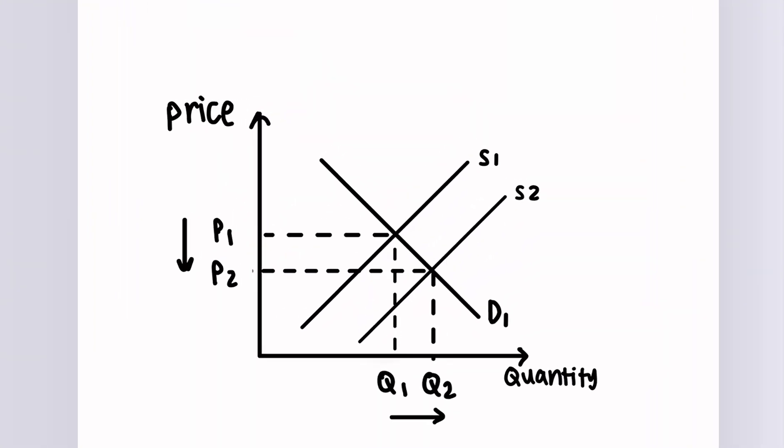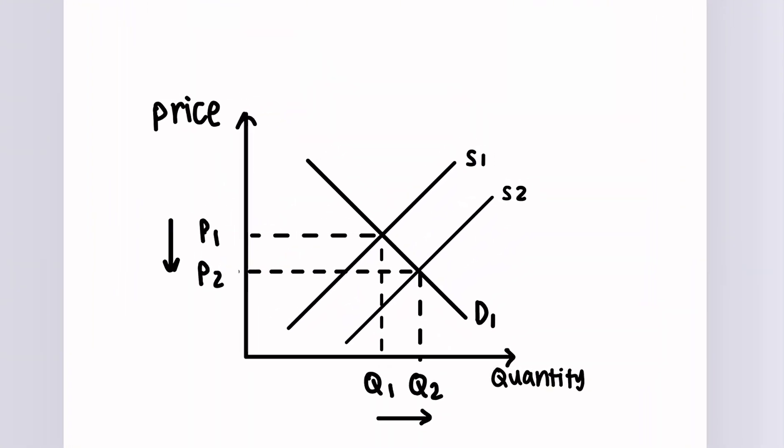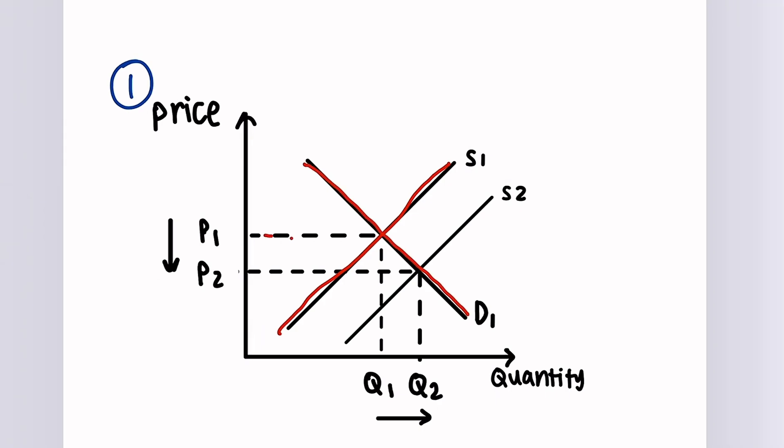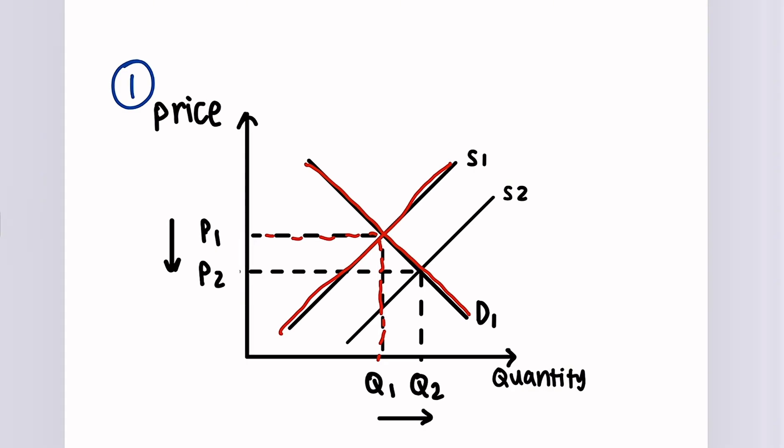So this one is for a demand and supply curve. Our first mark comes from labelling the axes. The second mark comes from the original equilibrium, which is D1 and S1, with the correct labels to P1 and Q1, which gives us our second mark. The third mark comes from accurately shifting the supply curve from S1 to S2, illustrated here. And the final mark comes from labelling the new equilibrium P2 and Q2.